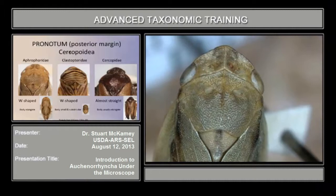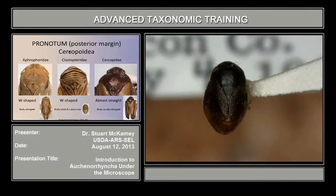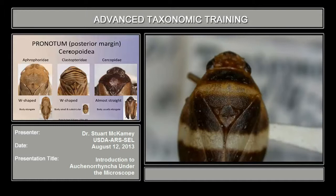Now looking at the pronotum of Cercopoid families — frog hopper families — we're going to look at the posterior margin of the pronotum. In Aphrophoridae, which are generally elongate, the posterior margin is W-shaped. In Clastopteridae, the pronotum is also W-shaped, and these are small, sub-circular species. In Cercopidae, it's almost straight across. There are two other families, but they've never been intercepted. Here's another example of Cercopidae with the almost straight posterior margin of the pronotum.